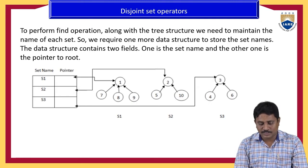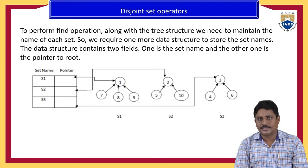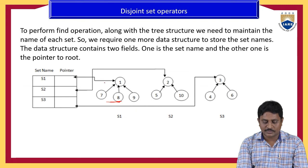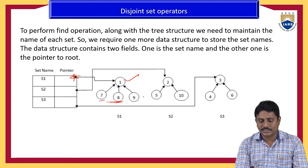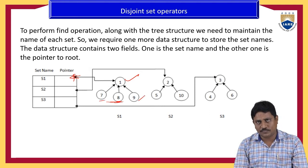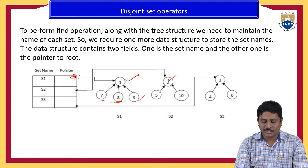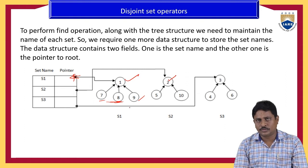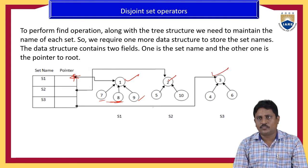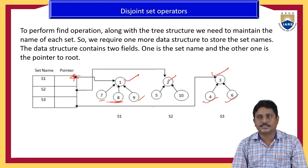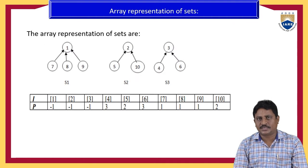This is the pointer representation of the sets. S1 is pointing to its set where one is the parent node and seven, eight, nine are the child nodes of one. In S2, two is the parent node and five and ten are the child nodes. In S3, three is the parent node and four and six are the child nodes.